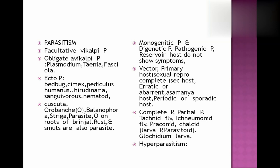Monogenetic parasite and digenetic parasite — two types. When a parasite completes its life cycle in one host it is monogenetic; when in two hosts it is digenetic. One host is also known as reservoir host — it does not show symptoms of disease. Primary host is the host in which the parasite completes its sexual reproduction cycle. Erratic or aberrant hosts are abnormal hosts.